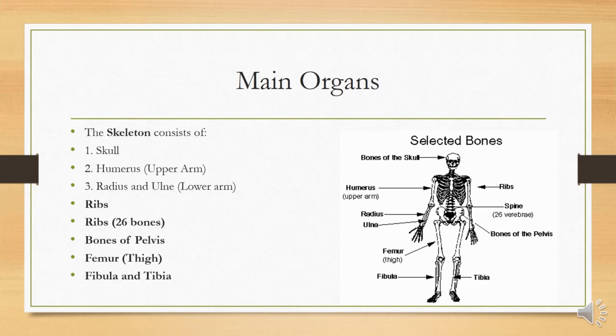So these are the main parts of the skeleton system: that is skull, humerus, radius and ulna, ribs, and spine which consists of 26 bones, and bones of pelvis, and thigh bone femur, fibula and tibia which are the lower leg bones.